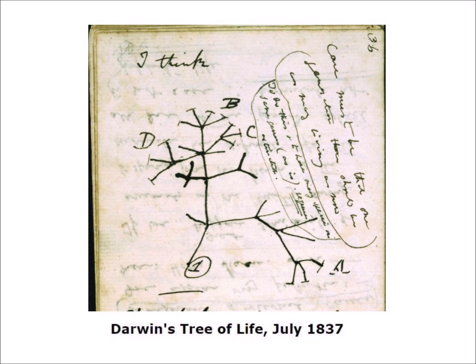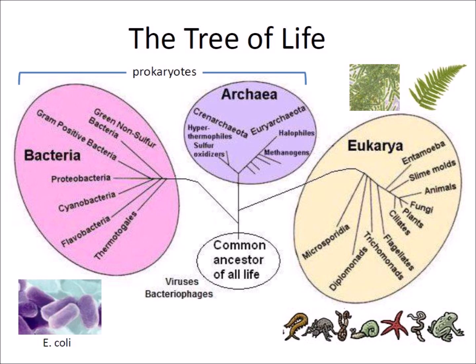The modern Tree of Life has three domains: bacteria, archaea, and eukarya. Bacteria are microscopic organisms that have shapes ranging from spheres to rods and spirals. Bacteria were the first life forms to appear on Earth and are present in most of its habitats. Archaea were initially classified as bacteria, but genetic analysis showed that archaea differ significantly from bacteria. Both bacteria and archaea are called prokaryotes because they have no cell nucleus, mitochondria, or other structures surrounded by a membrane.